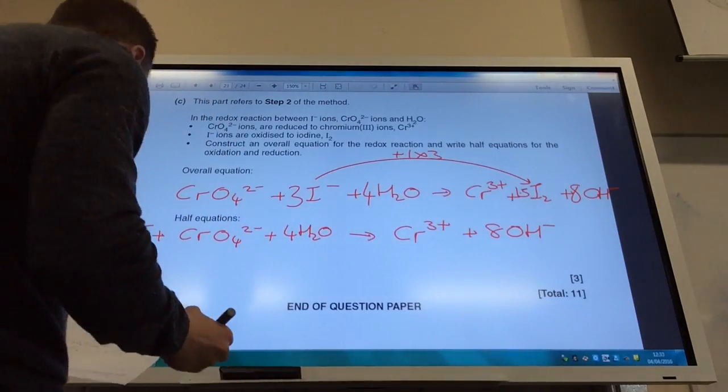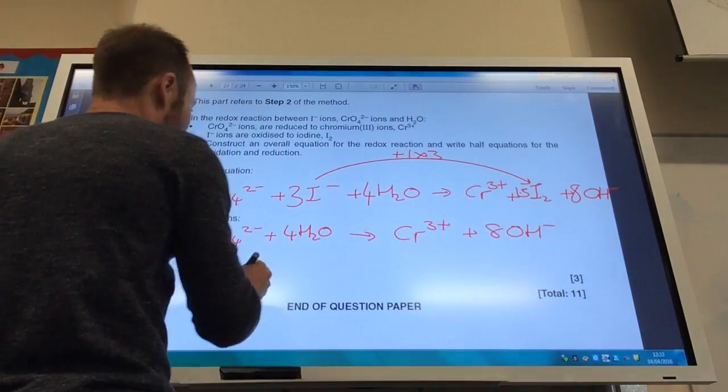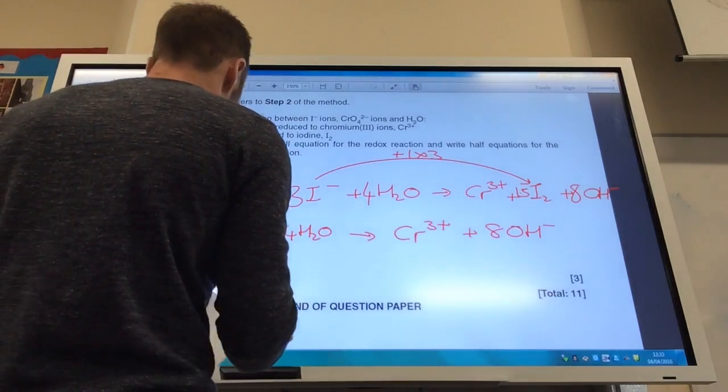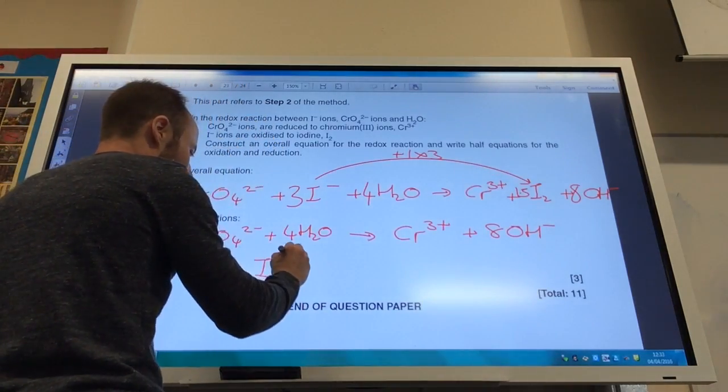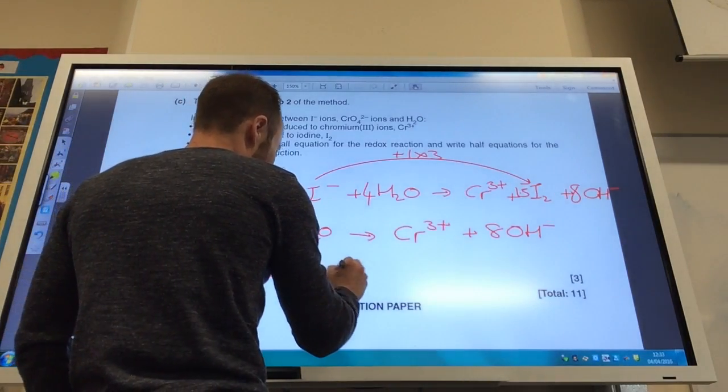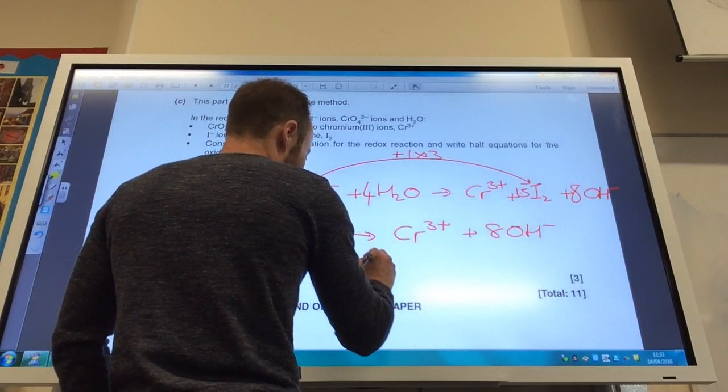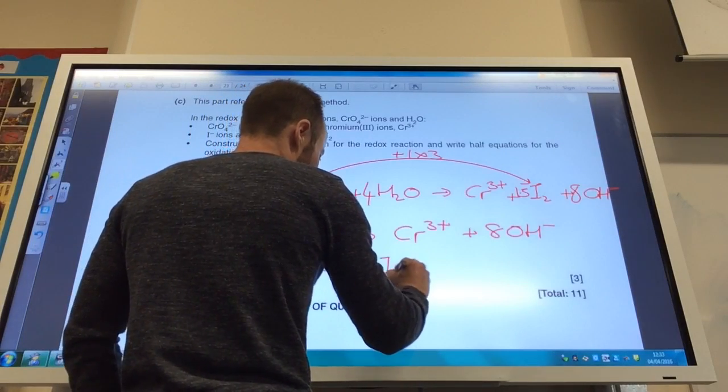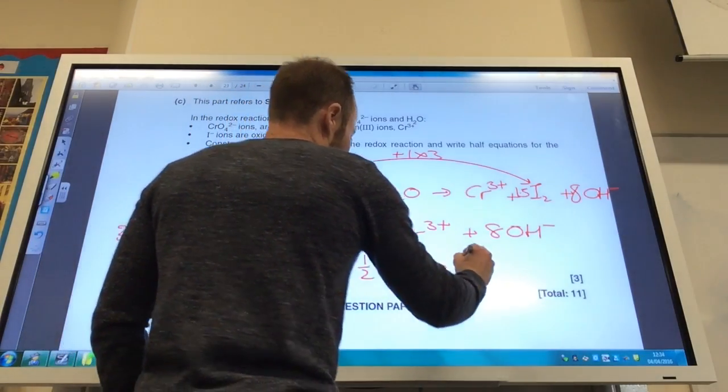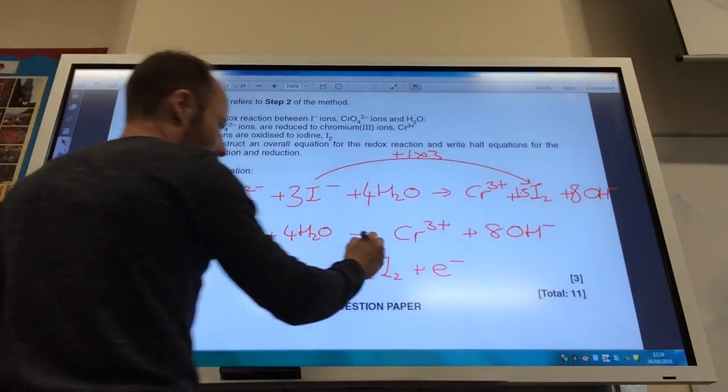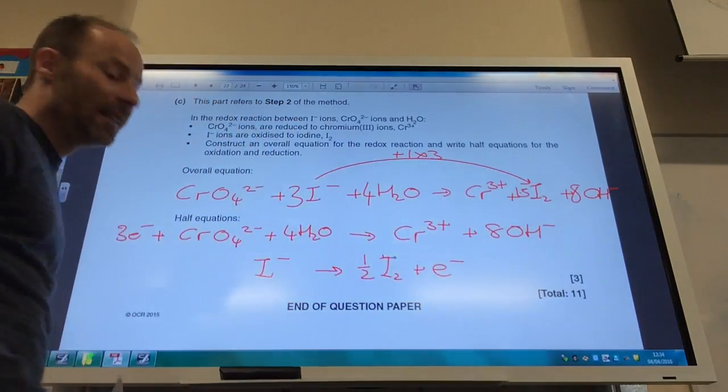Iodine far more straightforward. Iodine is just going to be I- goes to a half I2 plus an electron like so. And that is the end of the pencil.